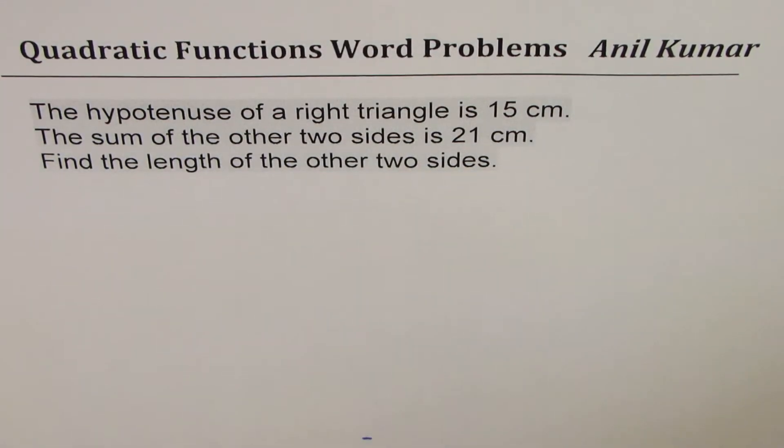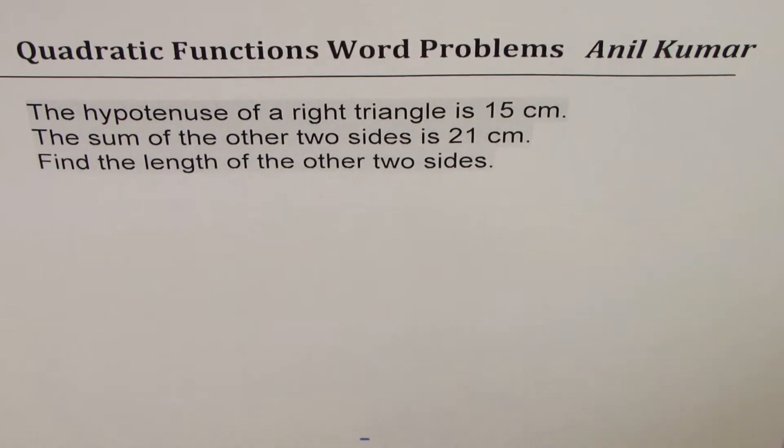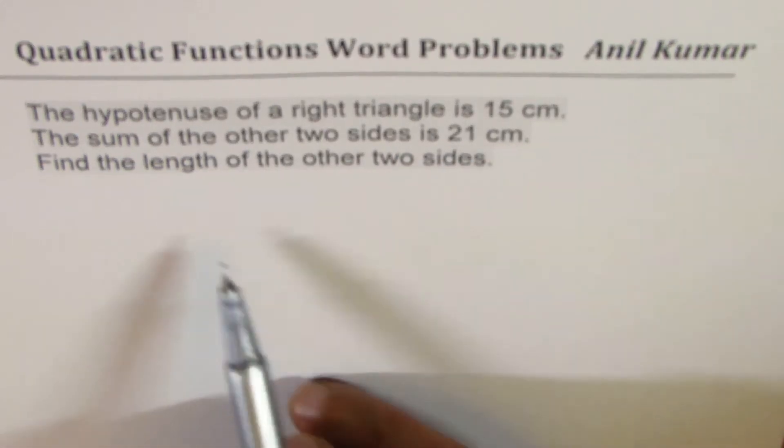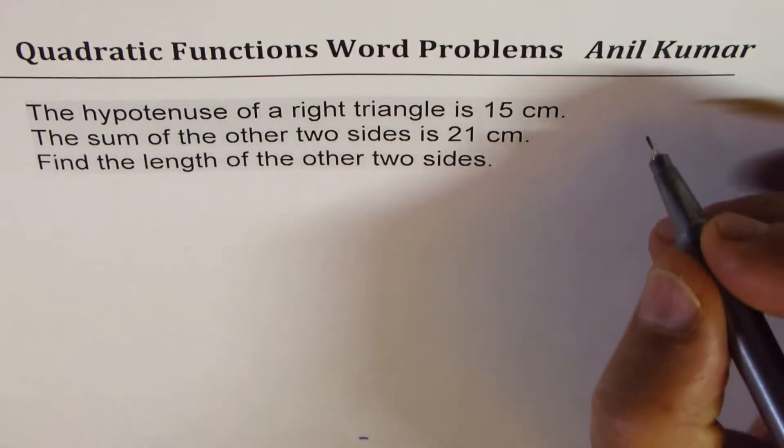I'm Anil Kumar, and here is another application of quadratic functions. The hypotenuse of a right triangle is 15 centimeters. The sum of the other two sides is 21 centimeters. Find the length of the other two sides. So let's sketch one.